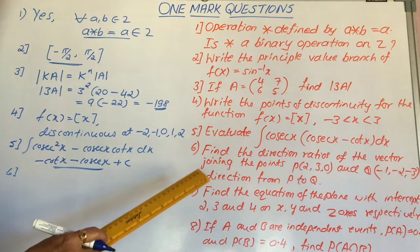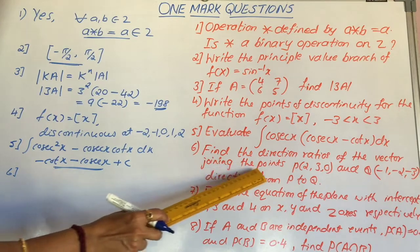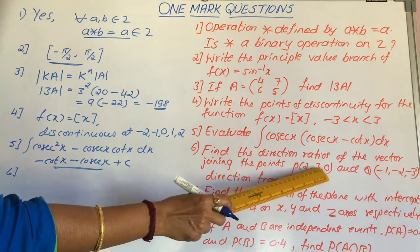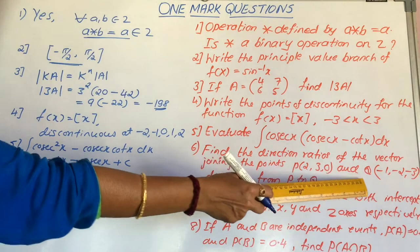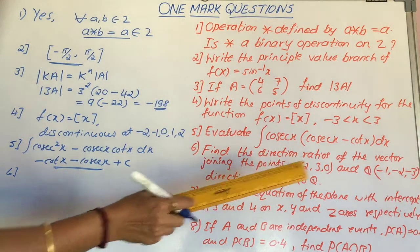Now, move on to question number 6. Find the direction ratios of the vector joining the points p of 2, 3, 0 and q of minus 1, minus 2, minus 3. The direction is from p to q.